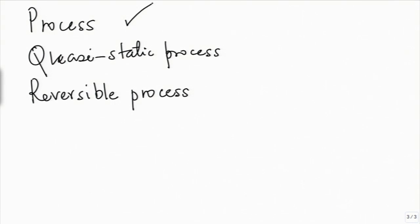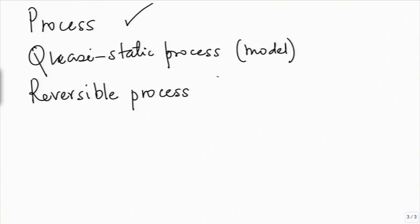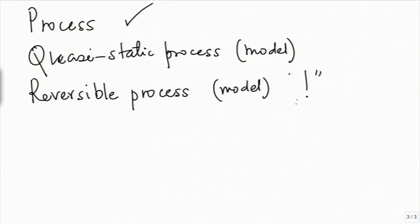Anything that happens in real life is a process. A quasi-static process is a model that helps with analysis, and it takes great effort to make a process quasi-static, but many real-life processes can be approximated as quasi-static. A reversible process is also a model, but to execute a process in a reversible fashion is perhaps impossible in real life, because in real life absolutely nothing is reversible. This is something we will think about and use in our analysis.